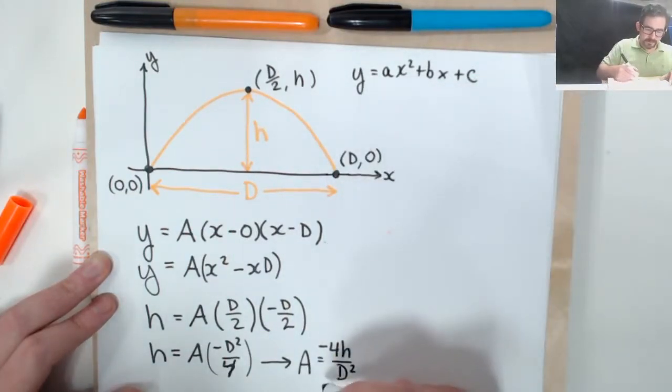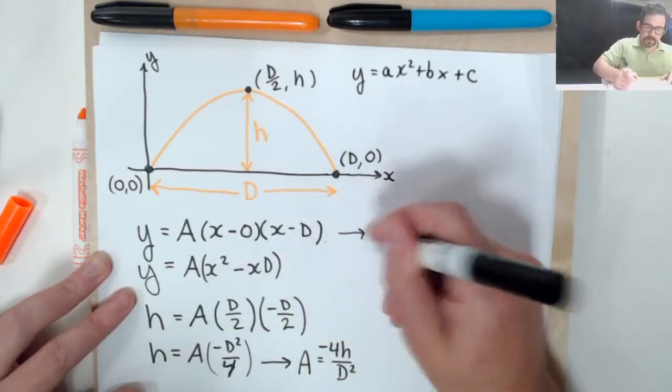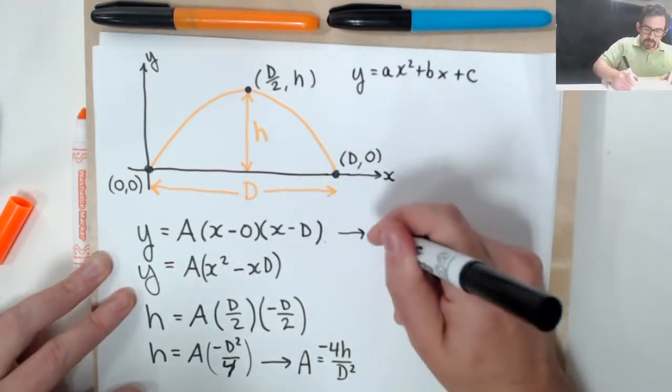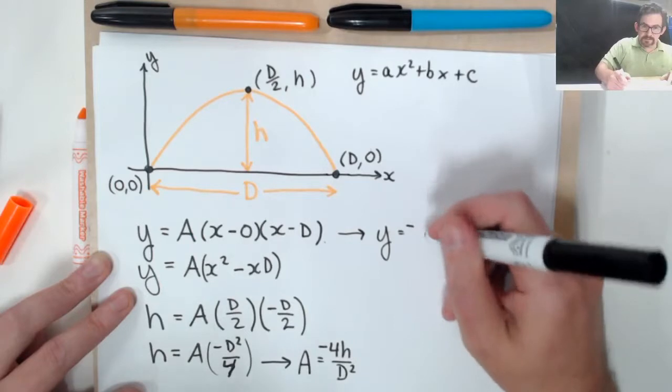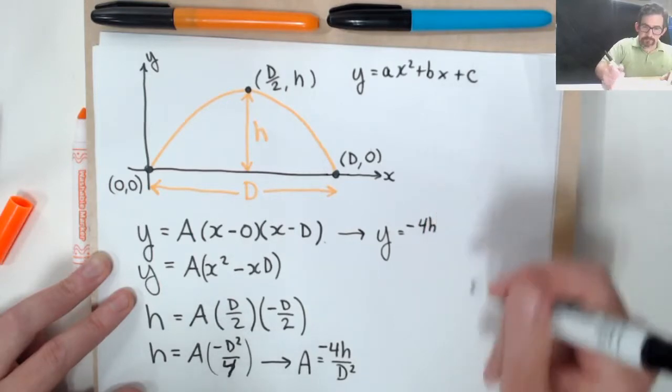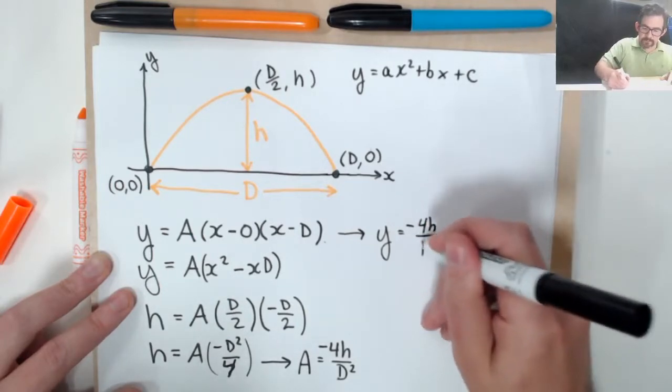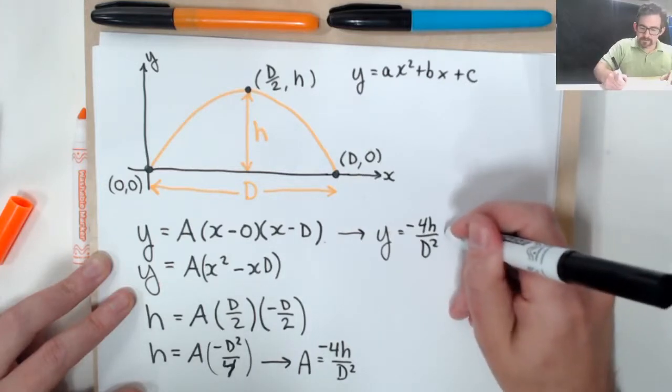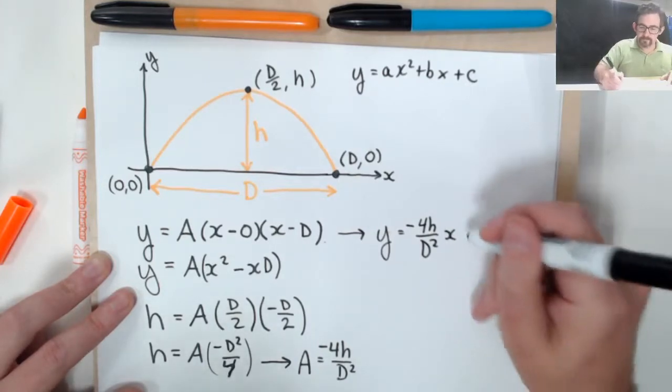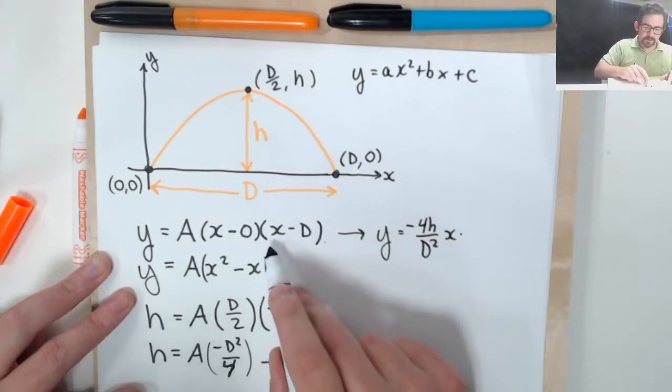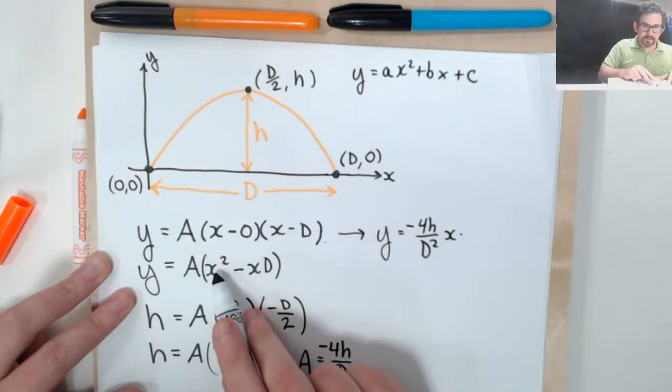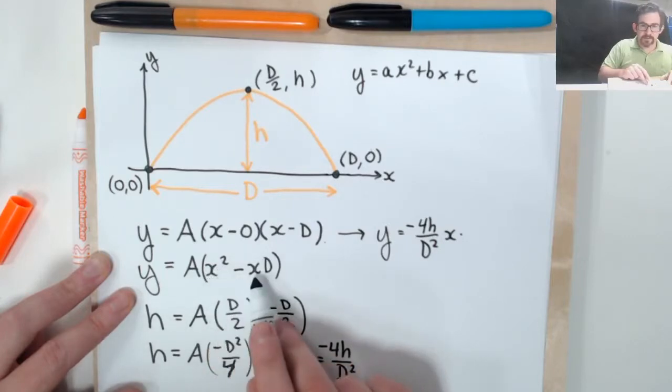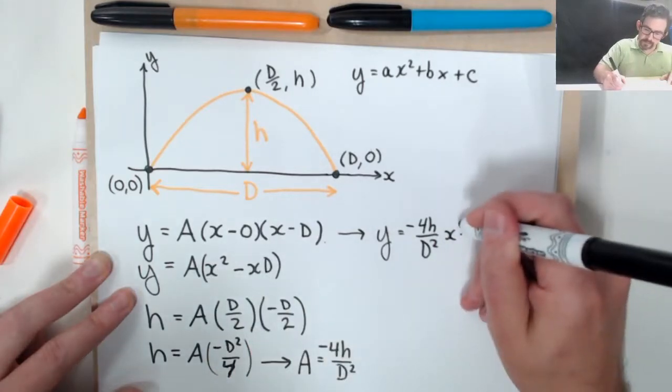So what does this tell us? Let's go back to this function here and plug in what we know. I know that y is going to equal a, plugging in what I found for a here, that's minus four h over d squared times x times x minus d. Or we could just go straight to this expression, x squared minus dx.